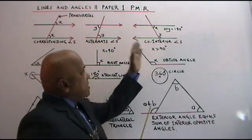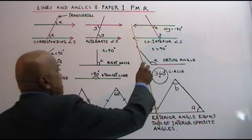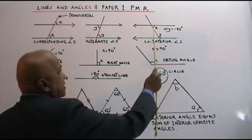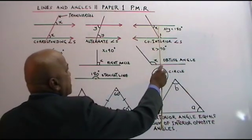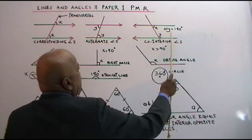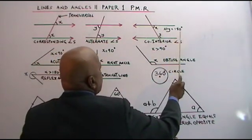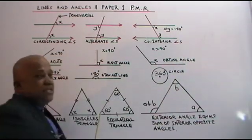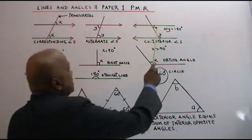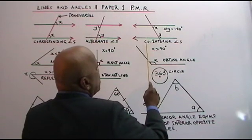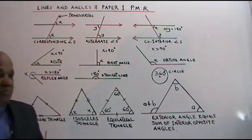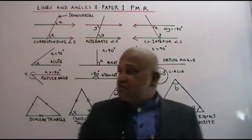Now look at the third diagram. These two are parallel lines, this is the transversal. These two angles, when you add them up, you always get 180 degrees. These two angles are known as co-interior angles.